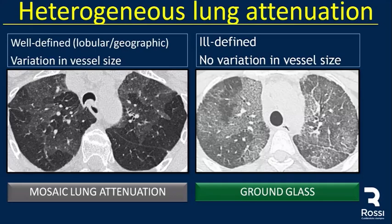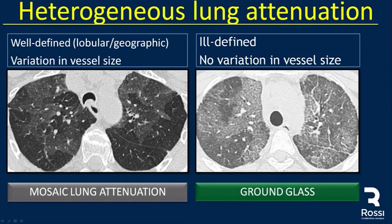When we describe heterogeneous lung attenuation, we have two main causes. Mosaic lung attenuation is mainly due to well-defined lobular and geographic areas — we see areas of diminished attenuation and areas of normal lung, with variation in vessel size and vessel constriction with diminished vascularity in patients with air trapping. Ground glass, by contrast, is mainly ill-defined with no variation in vessel size, as seen in interstitial disease with ground glass attenuation and some reticulation.